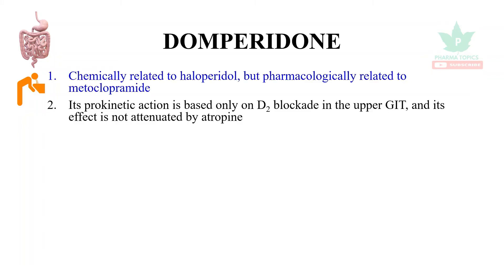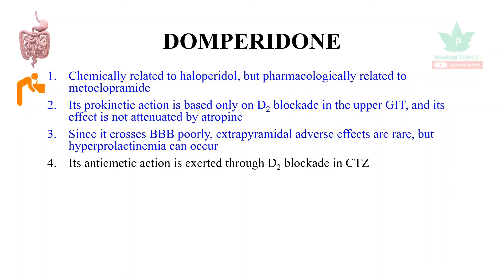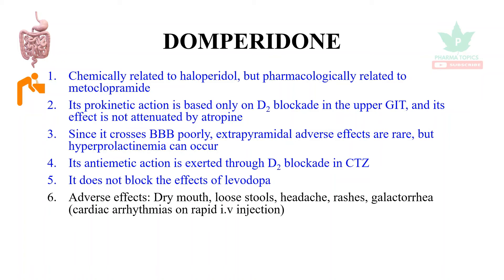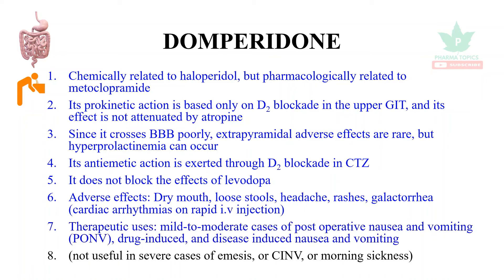Domperidone is chemically related to haloperidol but pharmacologically related to metoclopramide. Its prokinetic action is based only on D2 blockade in the upper GIT, and its effect is not attenuated by atropine. Since it crosses the blood-brain barrier poorly, extrapyramidal adverse effects are rare, but hyperprolactinemia can occur. Its antiemetic action is exerted through dopamine blockade in the chemoreceptor trigger zone. It does not block the effects of levodopa. Adverse effects include dry mouth, loose stools, headache, rashes, galactorrhea, and cardiac arrhythmias on rapid IV injection. Therapeutic uses include mild to moderate post-operative nausea and vomiting, drug-induced vomiting, and disease-induced nausea and vomiting. It is not useful in severe cases of motion sickness or cancer-induced nausea and vomiting.